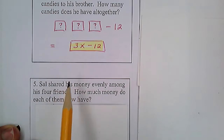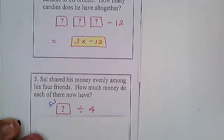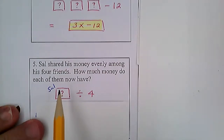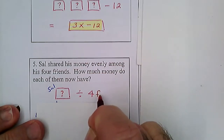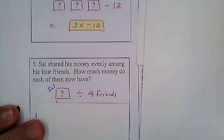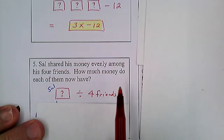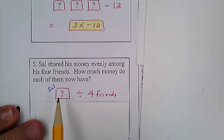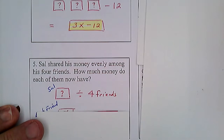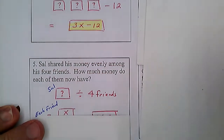He's going to share it — give some to friend one, some to friend two, some to friend three, and some to friend four — and they'll each get the same amount. We don't know how much Sal started with; that's unknown. But we know we're dividing it among four friends. You could actually draw four stick figure friends to help you remember there are four. Now we need to translate this to an algebraic expression.